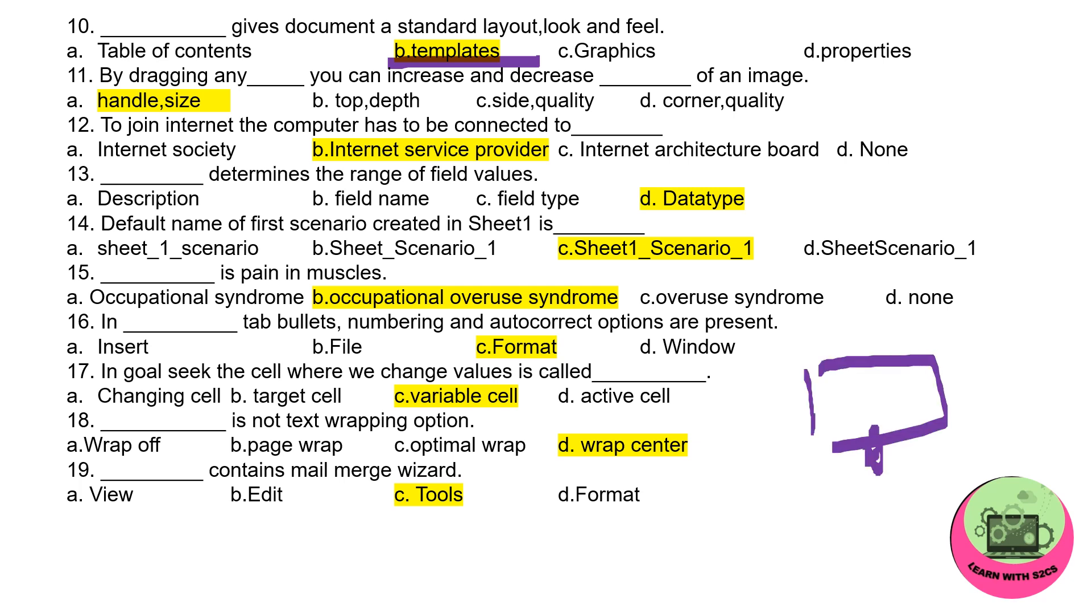You might have seen some image like this and there are small dots around that image - those are termed as handles. Using those handles you can increase or decrease the size of an image. Next: to join Internet, the computer has to be connected to ISPs. Which are the ISPs here? Airtel, Jio.